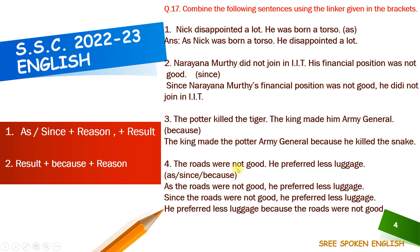Fourth example: the roads were not good. He preferred less luggage. Let us try with all three linkers. The reason is: the roads were not good. The result is: he preferred less luggage. With as: as the roads were not good, he preferred less luggage. With since: since the roads were not good, he preferred less luggage. With because: he preferred less luggage because the roads were not good.